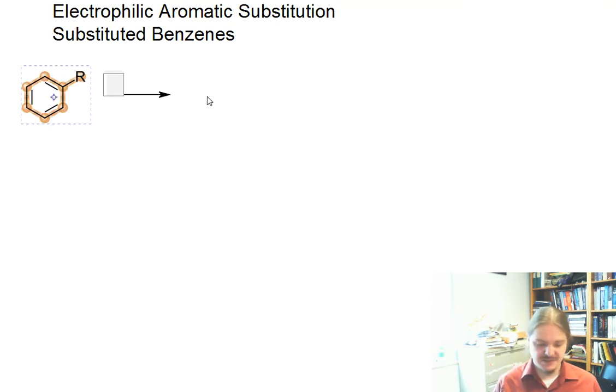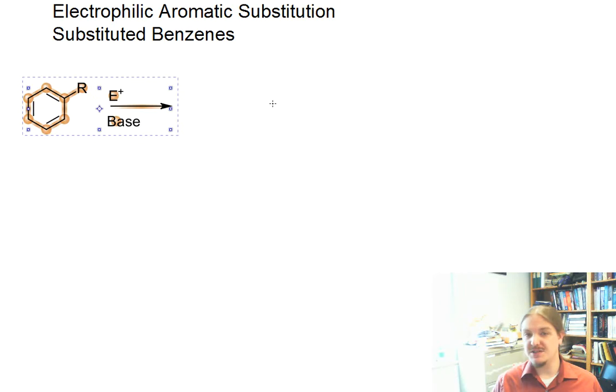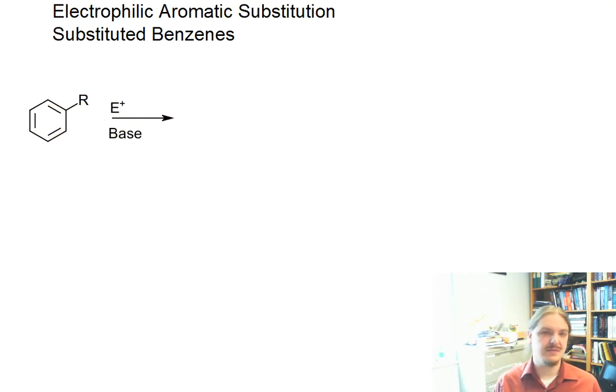And I'm not going to talk about any specific, I'm going to talk about one specific reaction maybe, but whatever our electrophile and base is. Once there's a substituent on benzene, we now have two possible ways these reactions can get more complicated.